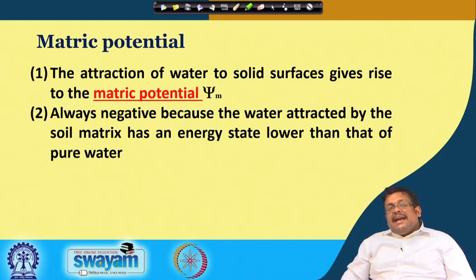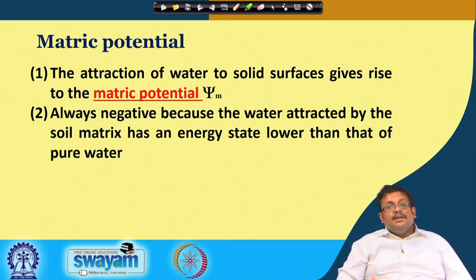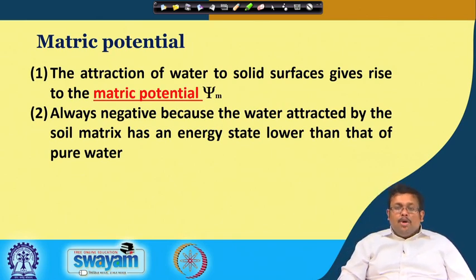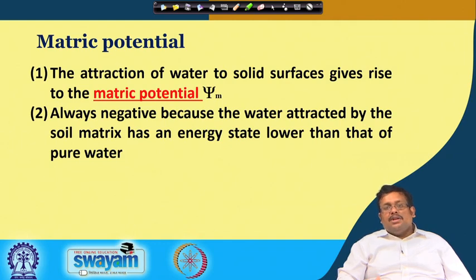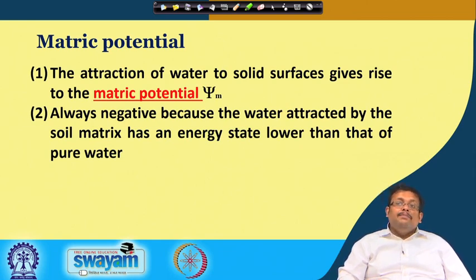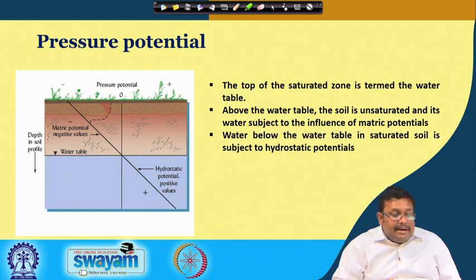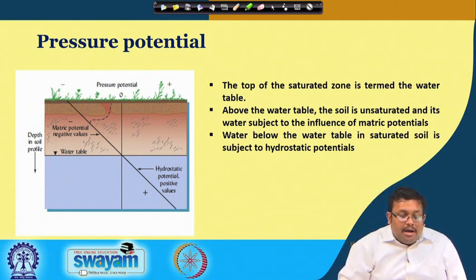Matric potential is the attraction of water to solid surfaces and gives rise to matric potential, psi_m. Remember that it is always negative because water attracted by the soil matrix has an energy state lower than that of pure water. As already shown in the diagram, matric potential and osmotic potential are always negative because the water attracted by the soil matrix has an energy state lower than that of pure water, which is considered as zero.